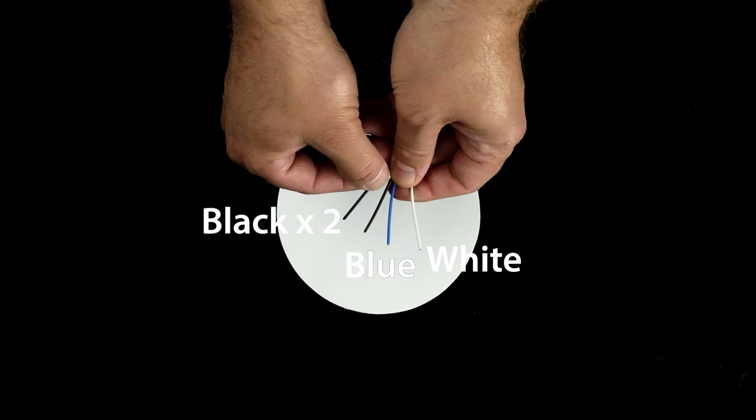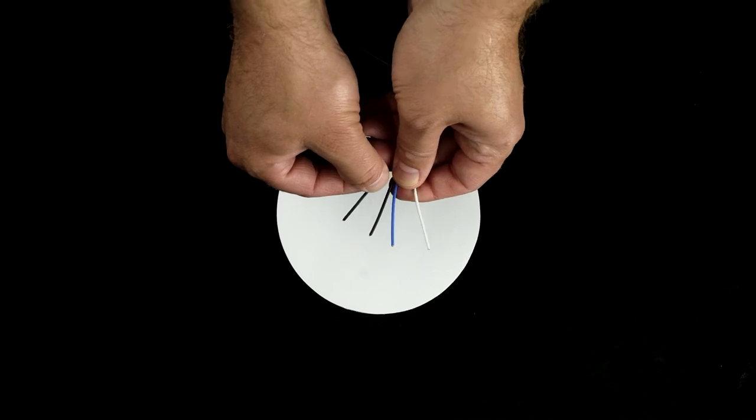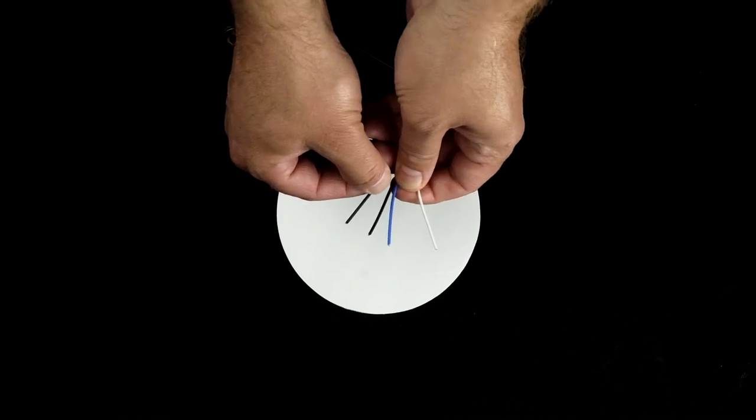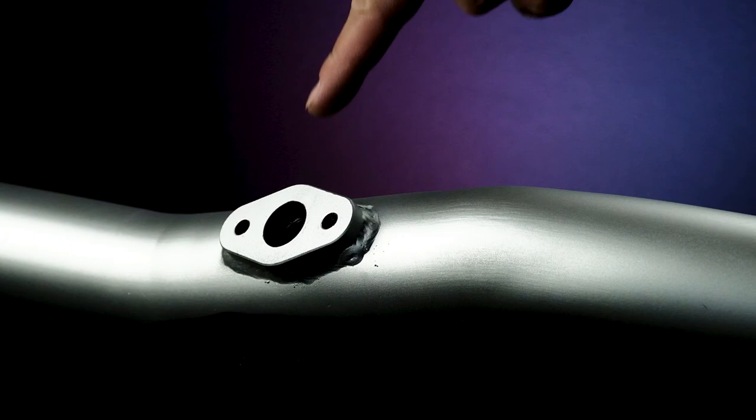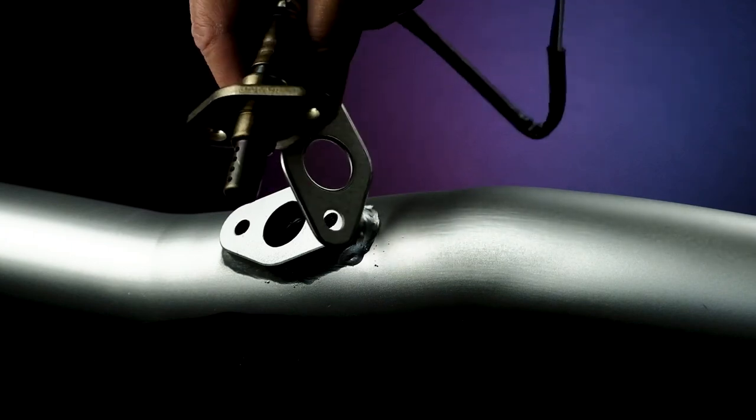If you receive a Bosch style sensor, match the wire colors black to blue, gray to white, and the two whites on the sensors go in place of the two blacks.